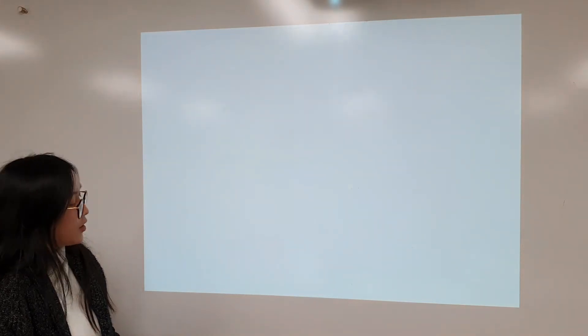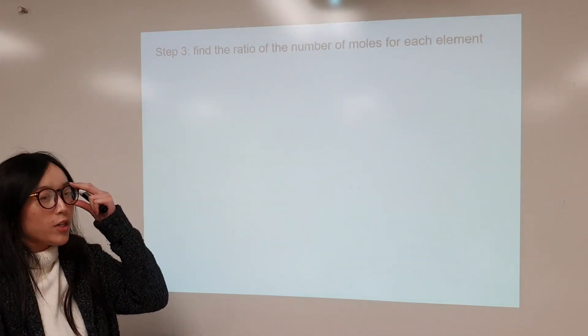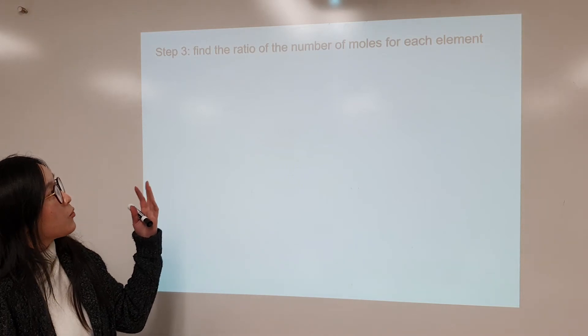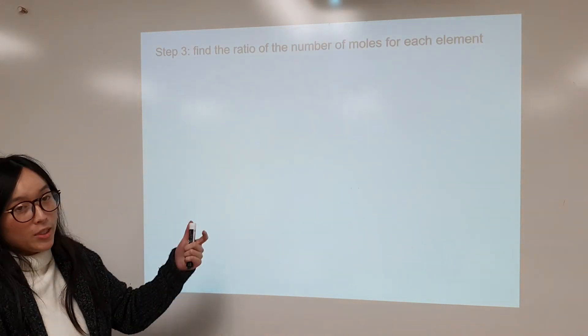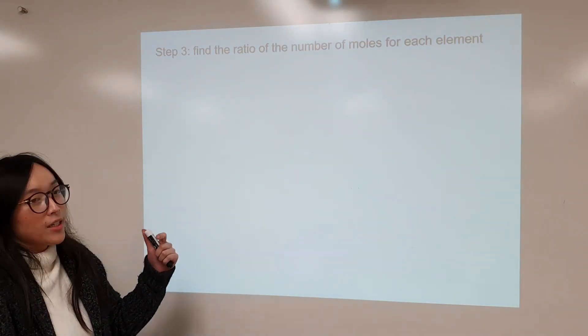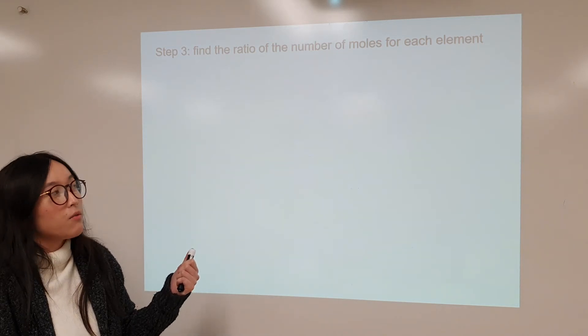So if you look at the next step, we're trying to find a ratio. So of course, you want to think of the number of moles for each atom or element. But dividing it by the smallest mole value.